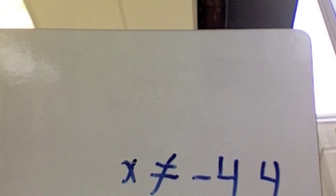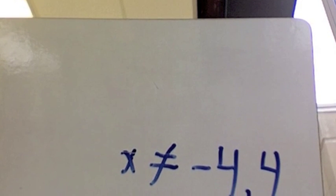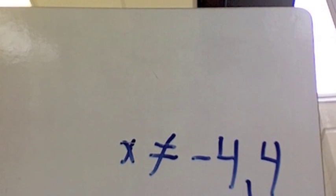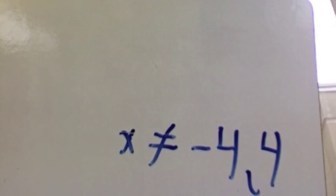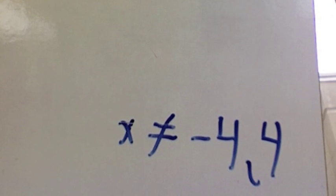Now you must set the denominators equal to 0, then solve as you would with a normal equation. Your answers are x is not equal to negative 4 or 4.